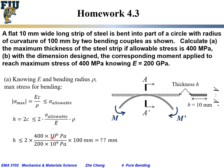Plugging in: h ≤ 2 × (400 × 10⁶) / (200 × 10⁹) × 0.1 m. This gives the maximum thickness of the steel strip from the cross-section calculation.